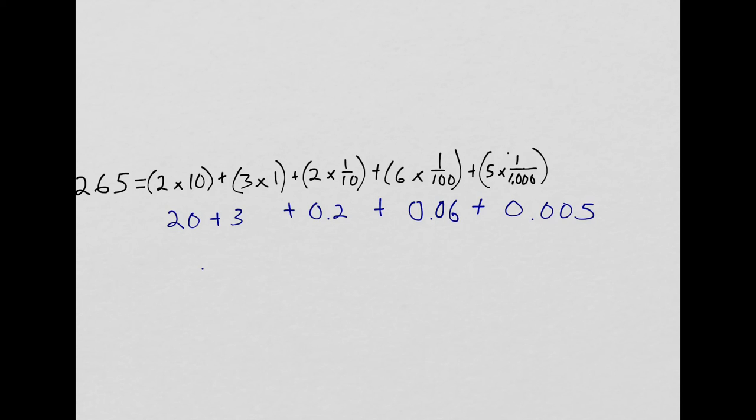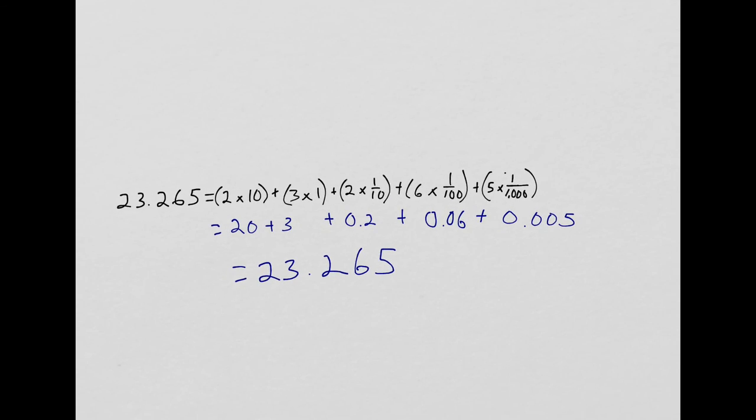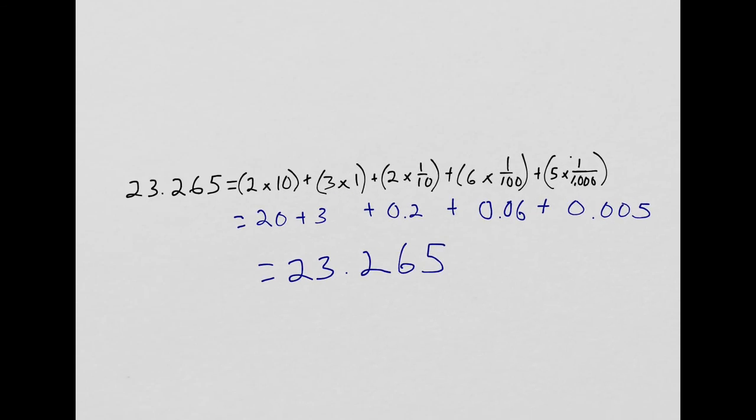And 20 plus 3 is 23, plus 2 tenths, 6 hundredths, 5 thousandths. And you'll notice that's the number I started with. And that's no coincidence. That's because I broke it out into each place value, and then I can put it back together pretty easily.